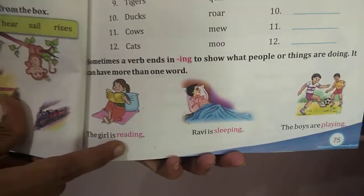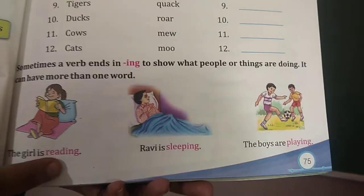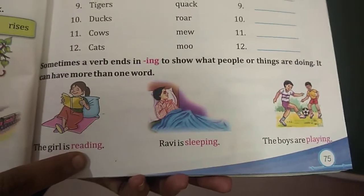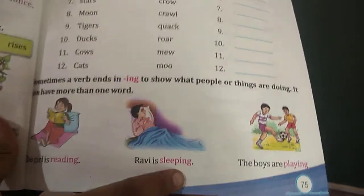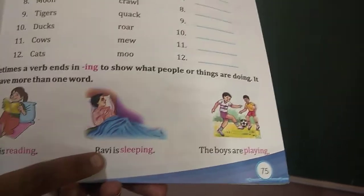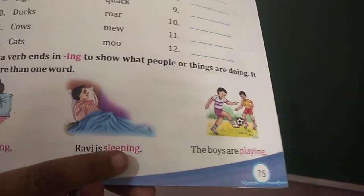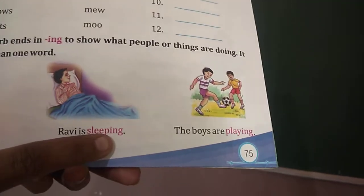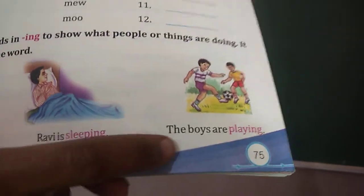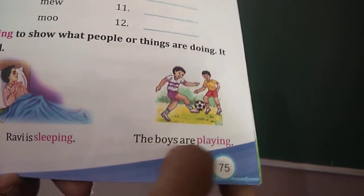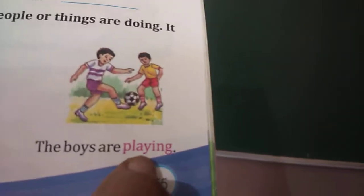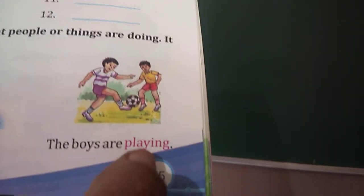Here are some more examples. The girl is reading. What is the girl doing here? The girl is reading. Here, 'reading' is an action word — what we call a verb. Next: Ravi is sleeping. What is Ravi doing here? Ravi is sleeping. So 'sleeping' is an action word, it is a verb. Next: The boys are playing. The boys are playing here. 'Playing' is a doing word or an action, so it is a verb.